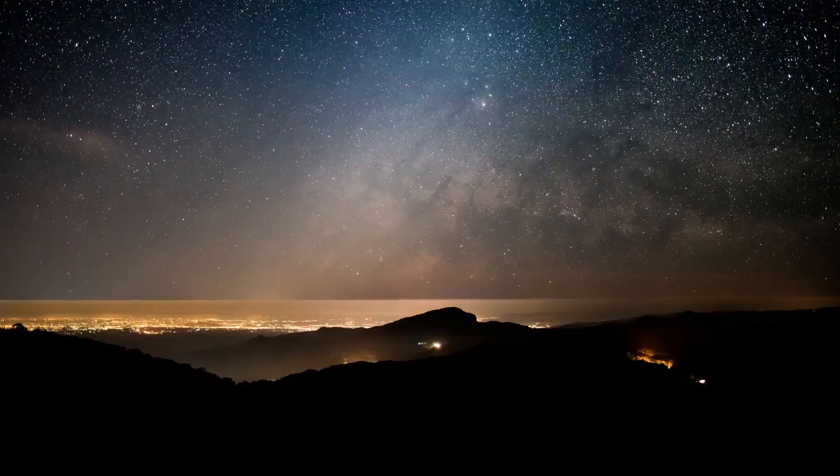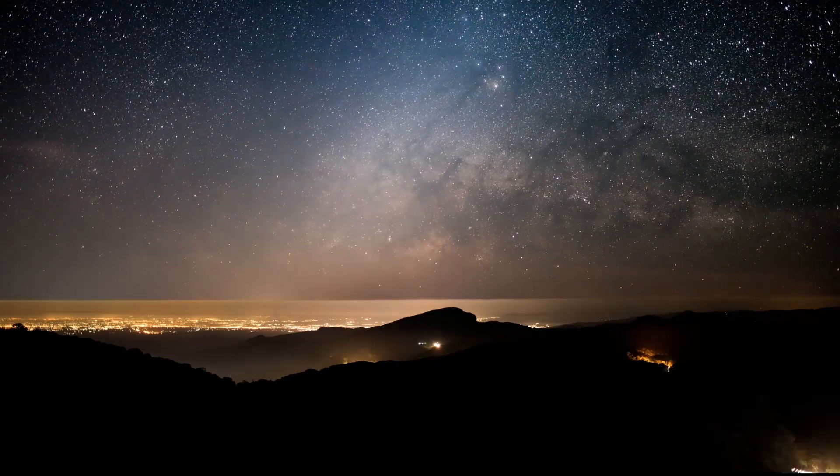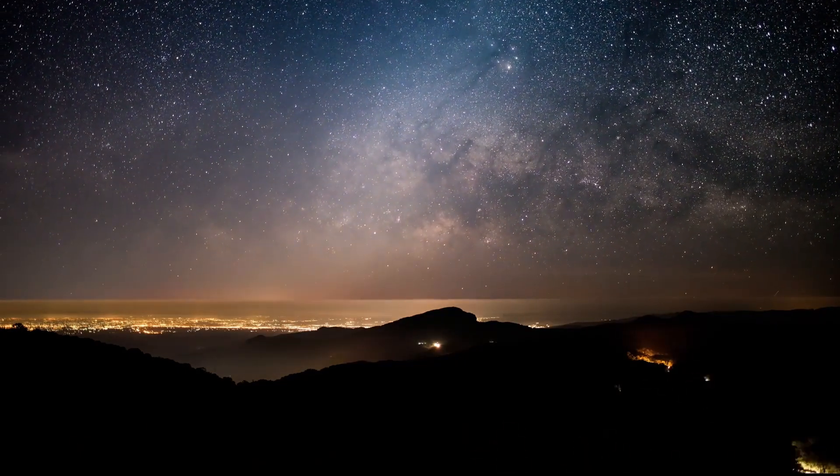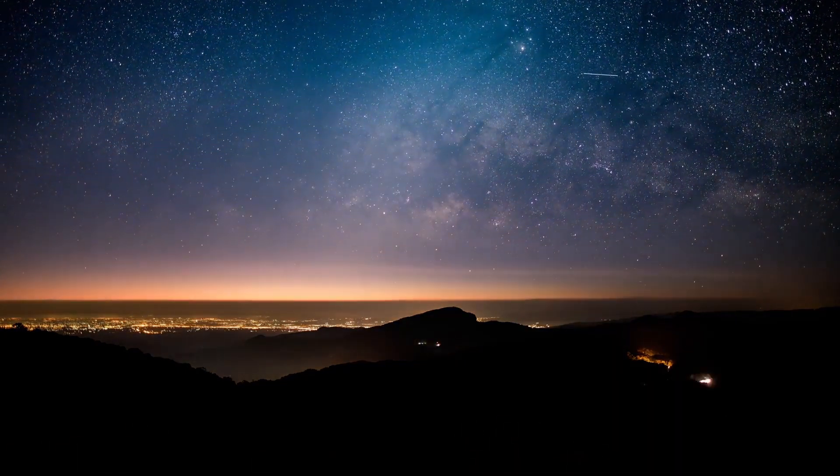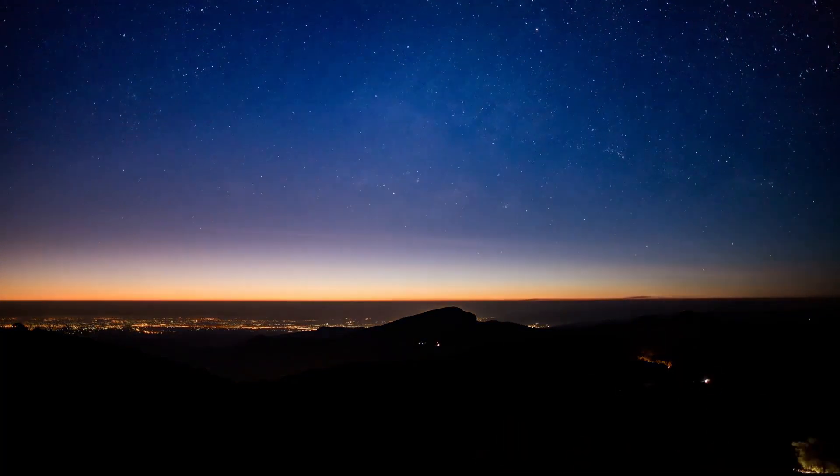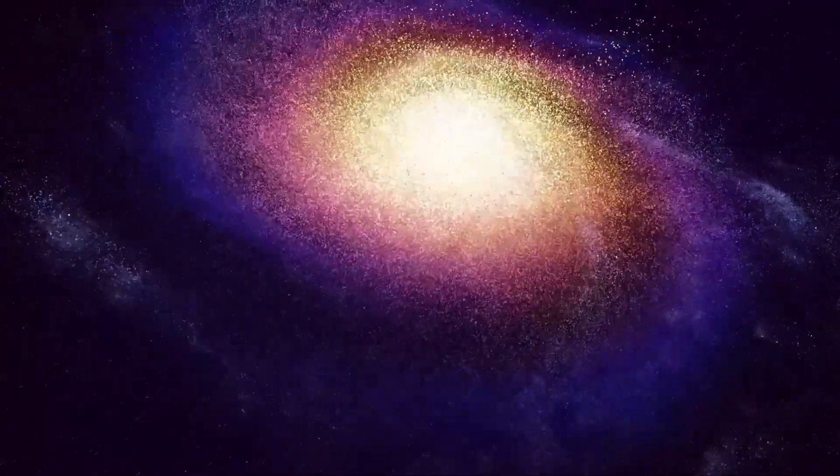Next in line were the Population 2 stars, forming a bit later but still in the universe's early days. Their original materials were laden with heavy elements, especially iron. Many of them danced through their stellar life cycles, bursting into supernovas and adding more heavy elements to the universal mix.